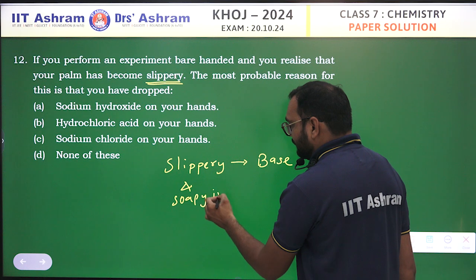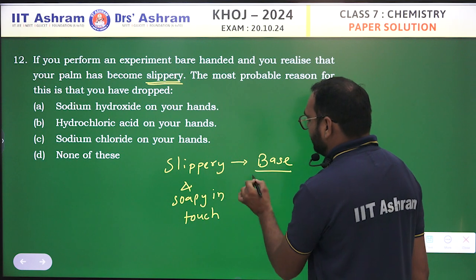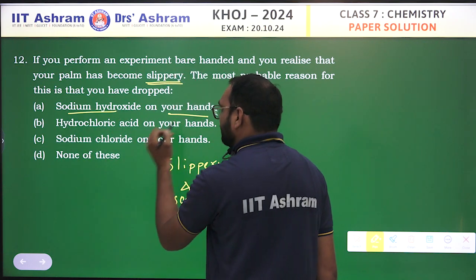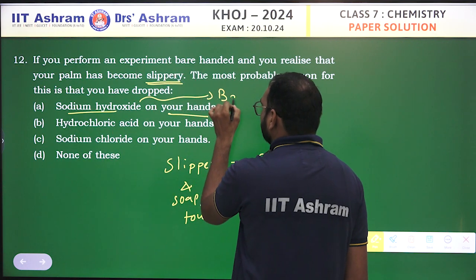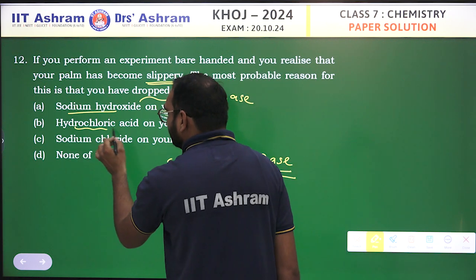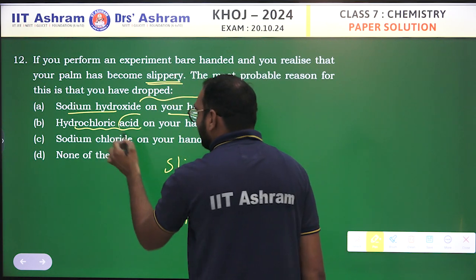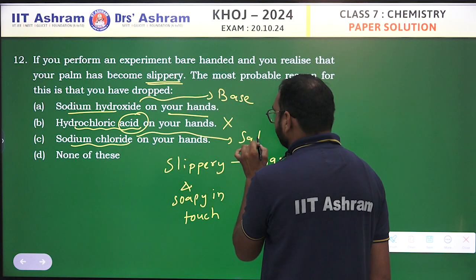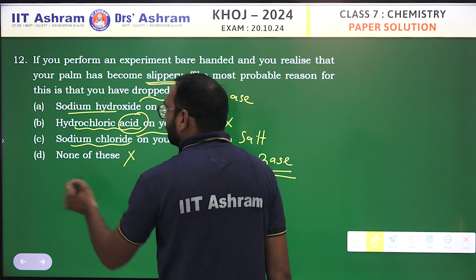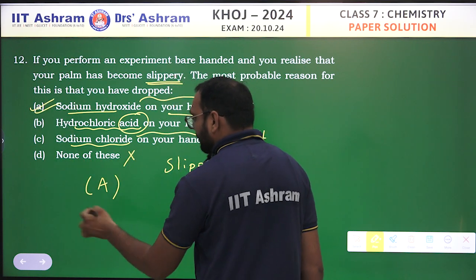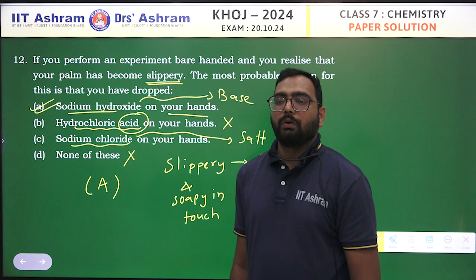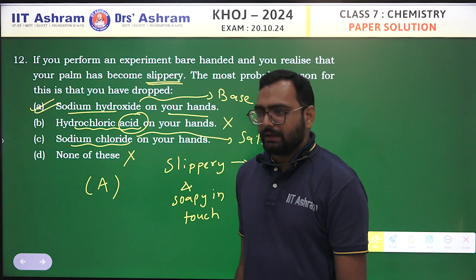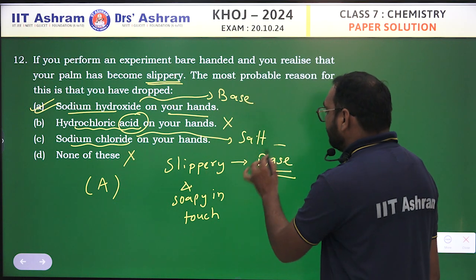Soapy in touch is the property of a base. Now let's see the options: sodium hydroxide on your hands — yes, that's possible, sodium hydroxide is a base. Hydrochloric acid — no, it is an acid. Sodium chloride — it is a salt. None of these — no. So option A is the correct answer. Sodium hydroxide, a base, accidentally spilled on the hand makes it slippery because it is the property of a base.